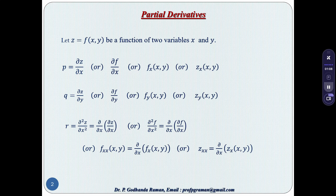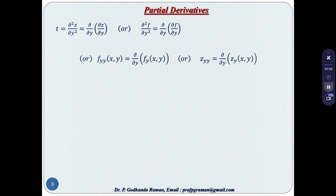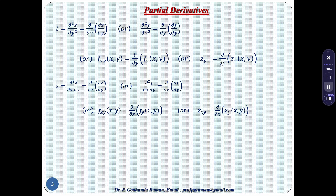Next, ∂z/∂x being a function of x can be differentiated partially with respect to x. We use the symbol r, or ∂²z/∂x², or ∂²f/∂x², or fxx, or zxx. Then ∂z/∂y considered as a function of y can be differentiated partially with respect to y, using symbol t, or ∂²z/∂y², or ∂²f/∂y², or fyy, or zyy. The symbol s is used for ∂z/∂y differentiated with respect to x, giving ∂²z/∂x∂y, or ∂²f/∂x∂y, or fxy, or zxy.